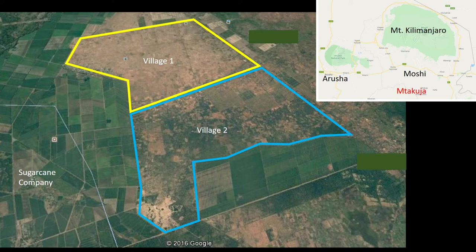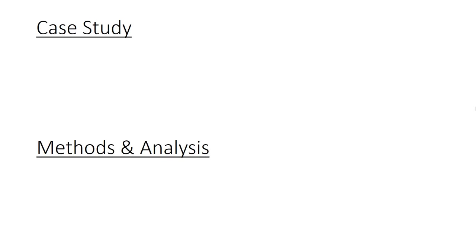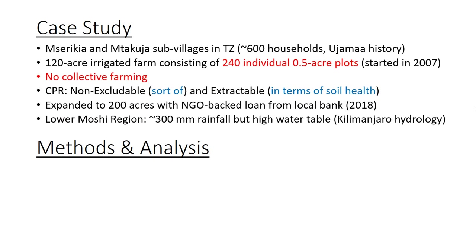The village, which used to be one village, is now two sub-villages, though we treat it still as one. It's located within a sugarcane farm — an 8,000 hectare farm — which plays a significant role in the development of the community as a whole. The two sub-villages are called Miserikia and Takuja. It's about 6,000 households. They have a Ujama history and very high ethnic diversity. The farm is about 120 acres and consists of half-acre plots, so with 600 households and 240 plots, that's not enough for everybody. We'll look at the rules for how people access a plot.